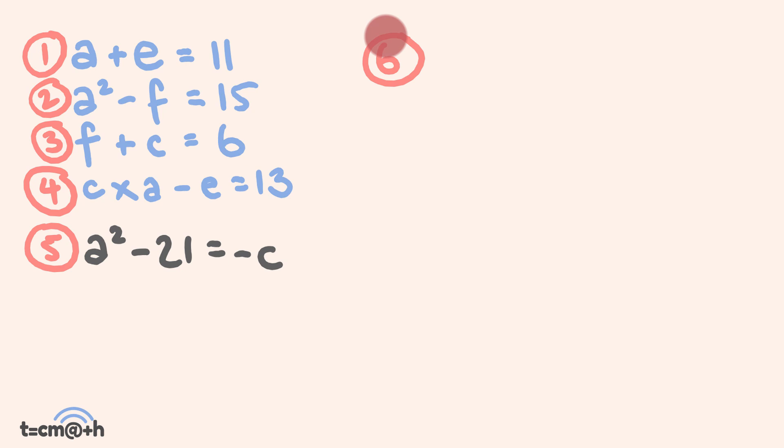The next thing we're going to do is form another equation, equation 6. Equation 6 is going to be formed by adding equation 1 and equation 4 together. Equation 1 is a + e = 11, and equation 4 is c × a - e = 13. When we add these two together, the positive e and negative e cancel each other out. We end up with a + ac = 24. The next thing we're going to do is rearrange this equation so we end up with a - 24 = -ac. Just to save space, I'm going to move this equation under the others.